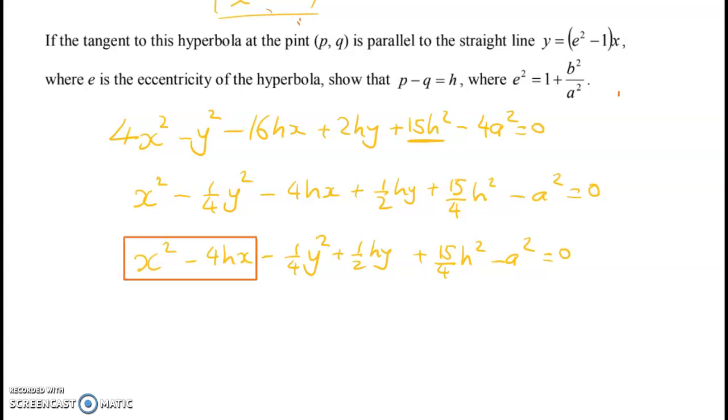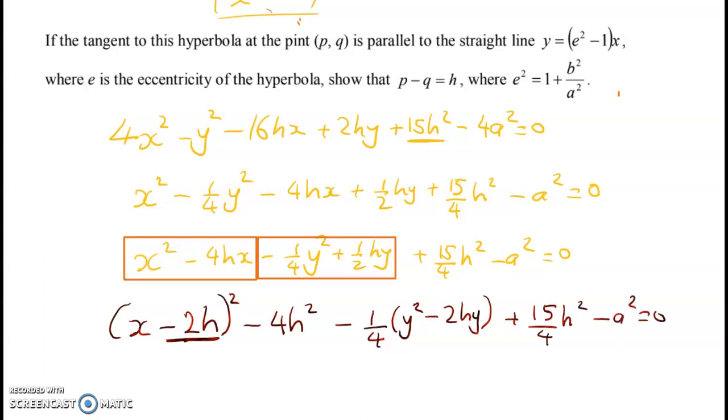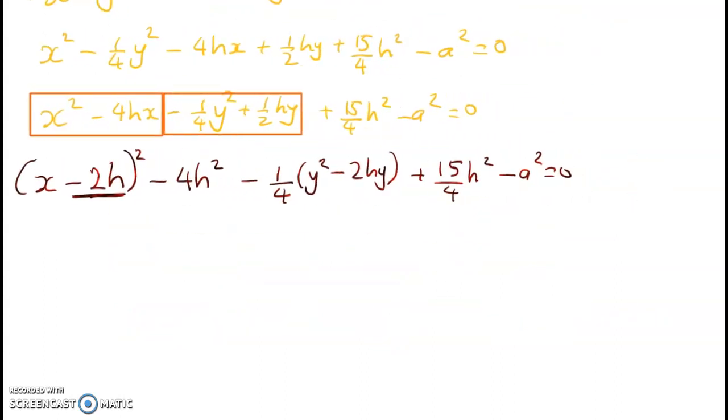The next step is to start completing the square. I'm doing completing the square on that and then I'm going to do a completing the square on that. The first one gives me x minus 2h squared and I've now added in an extra 4h squared so we're going to take it out straight away. And in here I've got minus one quarter times y squared minus 2hy plus 15 over 4h squared minus a squared equals zero. Going really slowly here on purpose. If this is too slow for you just skip ahead. I know from feedback that there are heaps of people out here who need me to go at about this pace. So here's x minus 2h squared, now working with this we get a minus one quarter into y minus h squared.